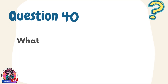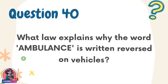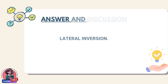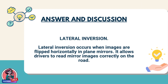Question 40. What law explains why the word ambulance is written reversed on vehicles? Answer: lateral inversion. Lateral inversion occurs when images are flipped horizontally in plane mirrors. It allows drivers to read mirror images correctly on the road.